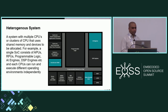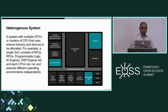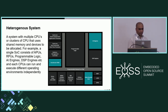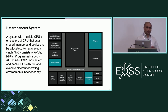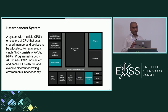A heterogeneous system is a system with multiple CPUs or a cluster of CPUs that uses shared memory and devices. For example, a single SoC can contain an APU, RPU, programmable logic — which includes MicroBlaze, AI engine, DSP engine — and each CPU can run a different operating environment independently. For example, you can run Linux on the APU and FreeRTOS on the RPU.